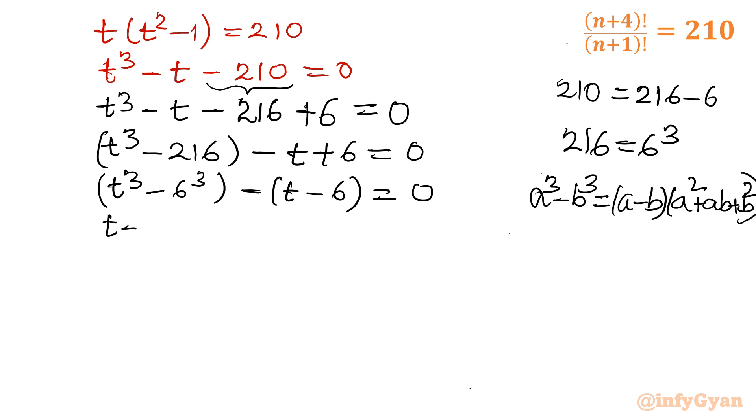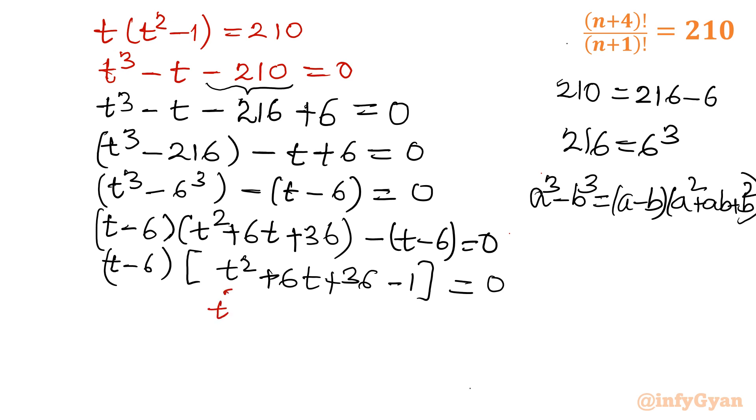So I will write here t-6 in one parenthesis, and the second would be t²+6t+36, minus (t-6) equal to 0. Now t-6, I will take completely common. So I would write (t-6) times (t²+6t+36-1) equal to 0. Now 36 minus 1 is 35. So this bracket will give us t²+6t+35, and the first one is t-6 equal to 0.